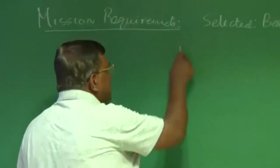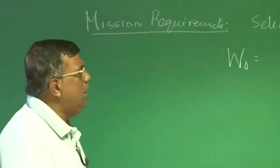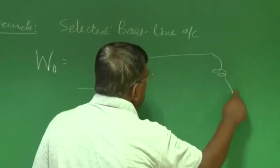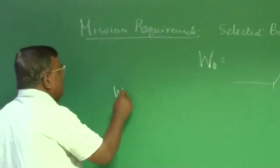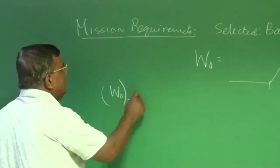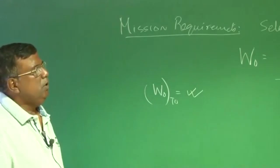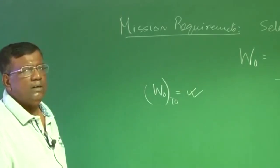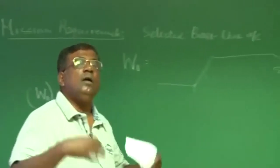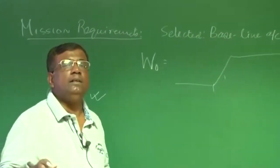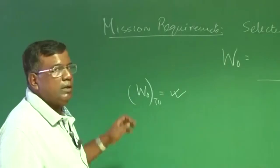In doing that, we first estimated W0 — a very gross estimation. We said there are primary mission requirements: takeoff, climb, cruise, etc., and W0 takeoff is some number. In this exercise we also estimated what is the empty weight fraction and what is the fuel fraction. A few we took statistically, a few we used physical understanding — like for range, loiter, and endurance. And finally we estimated W0 takeoff, the gross takeoff weight.